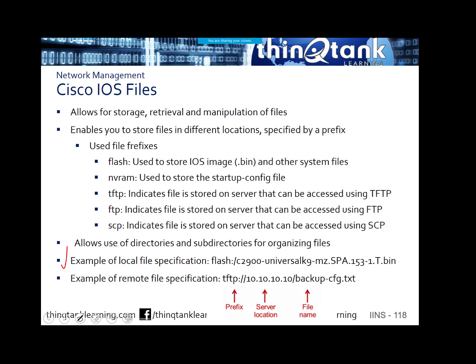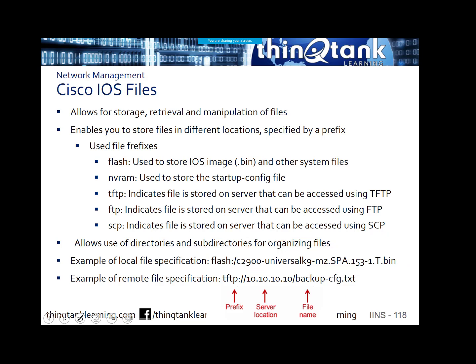The example of how a file might be stored in Flash — I would show you this in GNS3, but GNS3 doesn't actually have Flash. It's a virtual router. But you can see if I do a DIR flash colon or show flash, I can see the contents of the flash. In this case, this is a C2900 series image — it is a compressed, executable binary image, and it's digitally signed. I can use TFTP to specify the location of an image and a TFTP server. The server location is the IP address of the server, and the file that I'm trying to access is the file name.